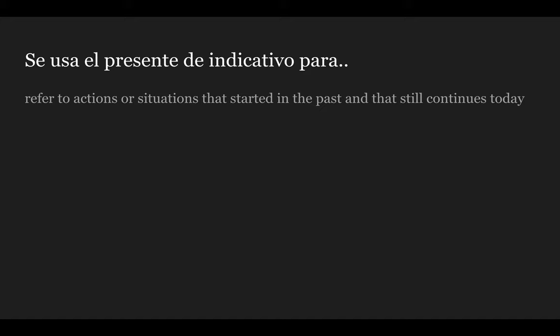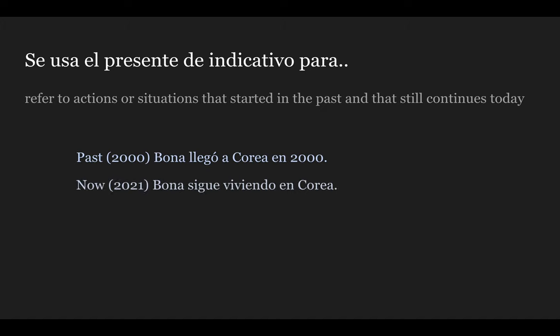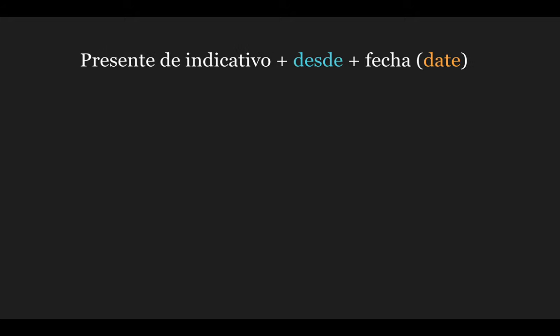Now let's look at how this tense is used in a sentence. You basically use this tense when you refer to actions or situations that started in the past and still continue today. For example, let's say in the past, in 2000, a girl named Bona arrived in Korea. So you'd say: Bona llegó a Corea en dos mil. And now, in the present, 2021, Bona is still living in Korea — Bona sigue viviendo en Corea. In this situation, you use the present indicative tense to say: Bona vive en Corea desde dos mil. We're going to look at a total of three formulas for how to use this tense to express periods of time.